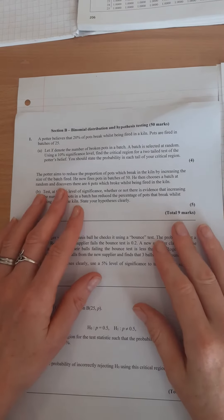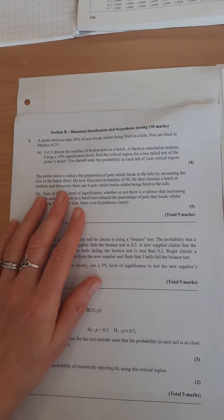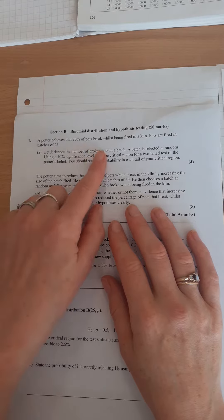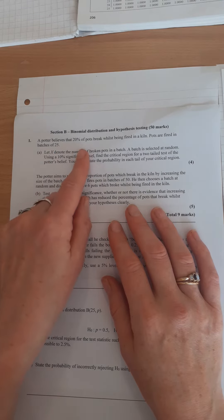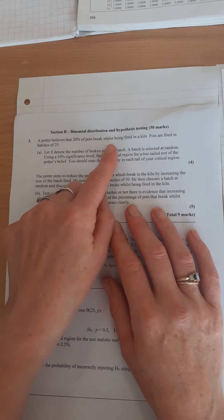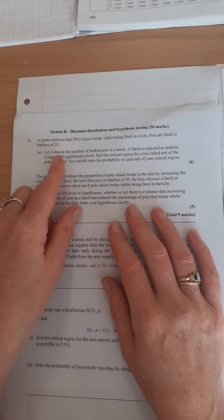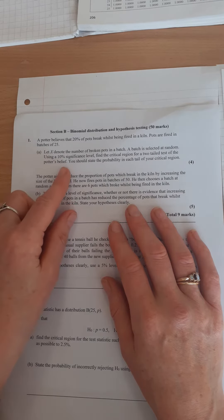Okay, we're going to be looking at some questions on binomial distribution and hypothesis testing. Starting with this question: Potter believes that 20% of pots break whilst being fired in a kiln, pots are fired in batches of 25.